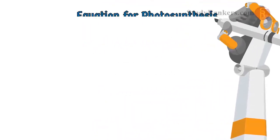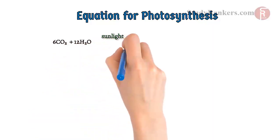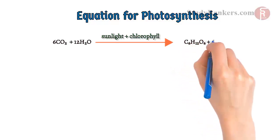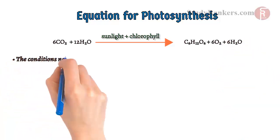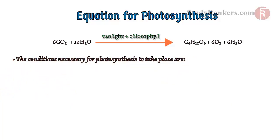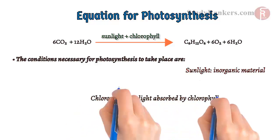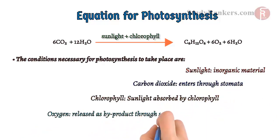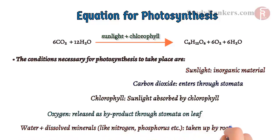The equation for photosynthesis is: 6CO2 + 12H2O in the presence of sunlight and chlorophyll gives C6H12O6 + 6O2 + 6H2O. The conditions necessary for photosynthesis to take place are sunlight, chlorophyll — sunlight absorbed by chlorophyll — carbon dioxide entered through stomata, and oxygen is released as a by-product through stomata on the leaf. Water plus dissolved minerals like nitrogen, phosphorus etc. are taken up by the roots from the soil.